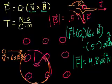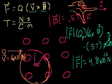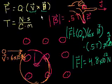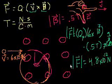In the last video, we figured out that if we had a proton coming in to the right at a velocity of 6 times 10 to the seventh meters per second — so the magnitude of the velocity is one-fifth the speed of light — and if it were to cross this magnetic field, we used this formula to figure out that the magnitude of the force on this proton would be 4.8 times 10 to the negative 12 newtons.